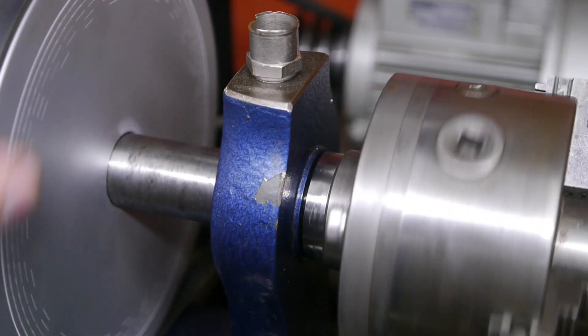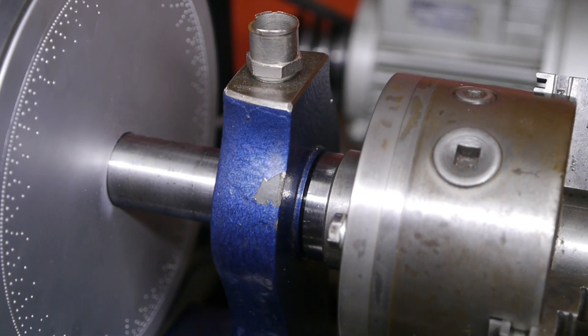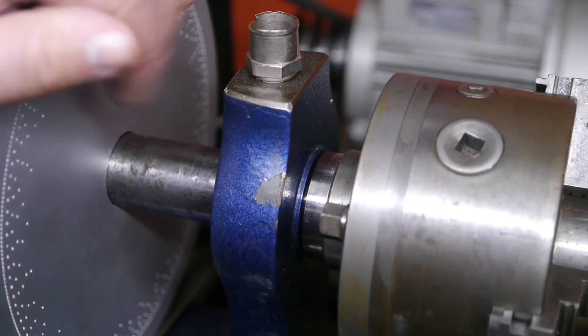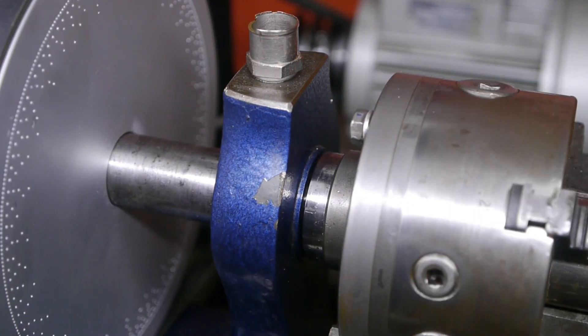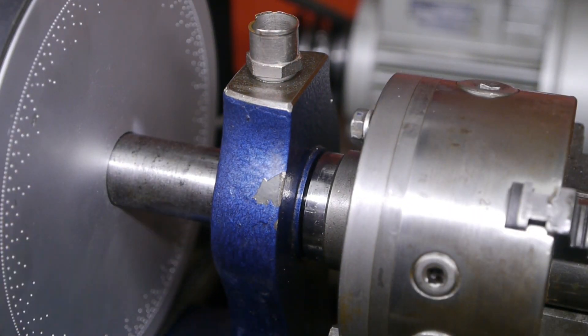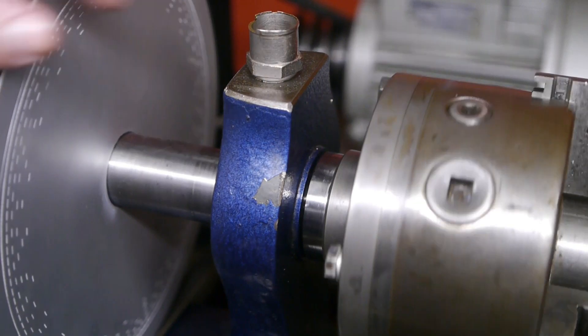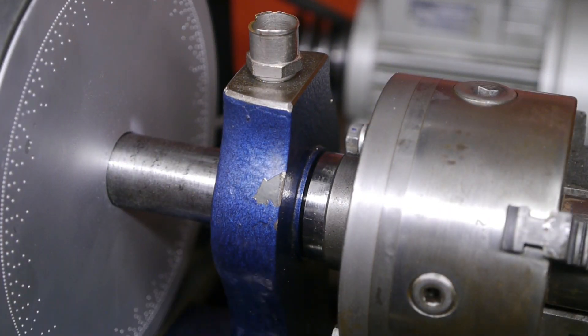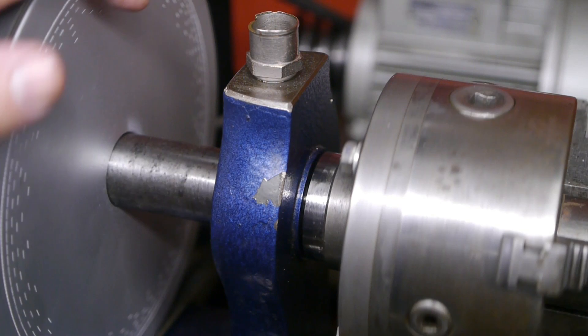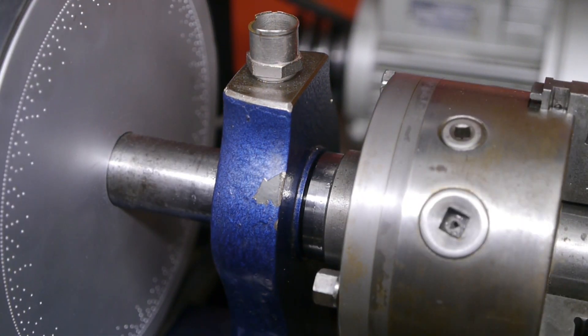I will also need to switch to thicker oil, because the ISO 68 hydraulic oil, the same as I'm using on my other lathe, it just runs out too quickly. There really is nothing that keeps the oil inside the bearings. They are completely open on both sides. I'm probably going to use some sort of molybdenum grease, but I still haven't decided yet.